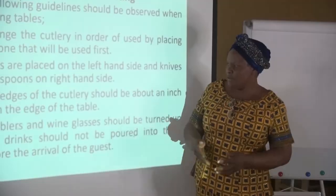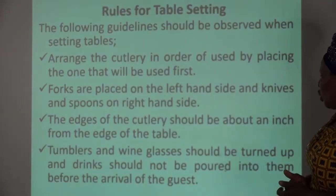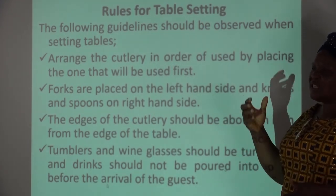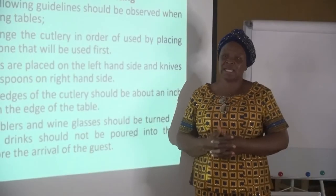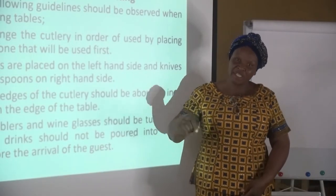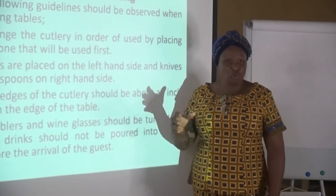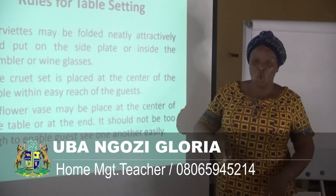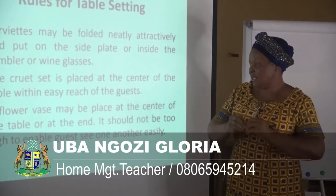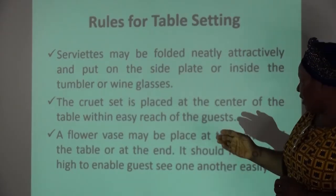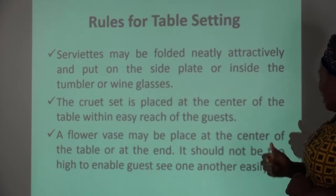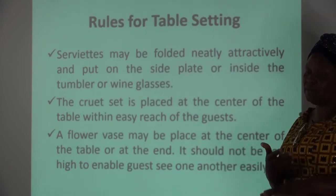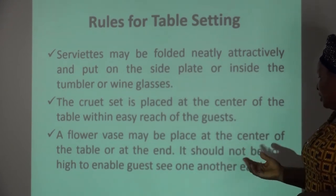Tumblers and wine glasses should be turned up and drinks should not be poured in them beforehand. If water or wine is already poured in the glasses before the guest arrives, they will not drink it. Wine should be poured in the presence of the guest. You can fill the glass with a neatly and attractively folded napkin. A flower vase may be placed at the center of the table and should not be too high so that guests can see one another easily.